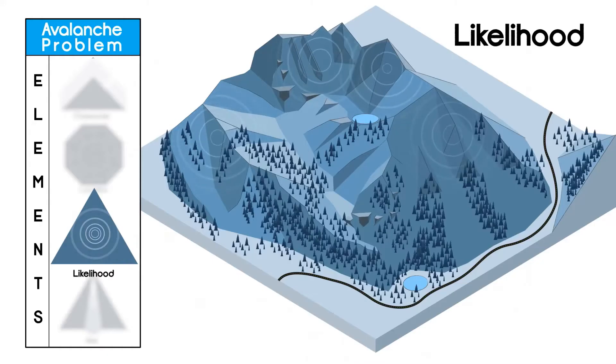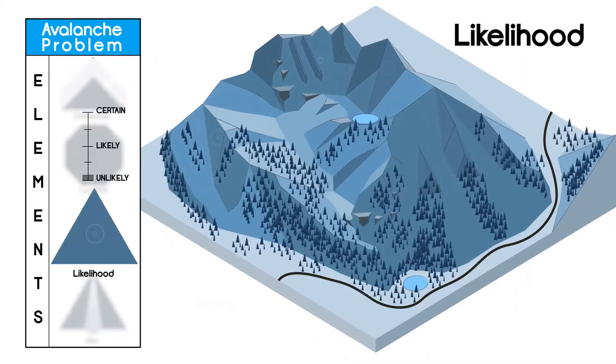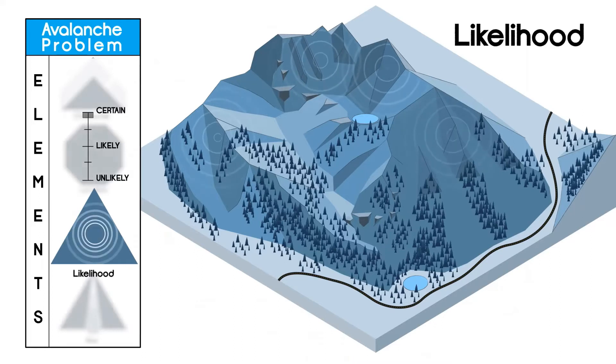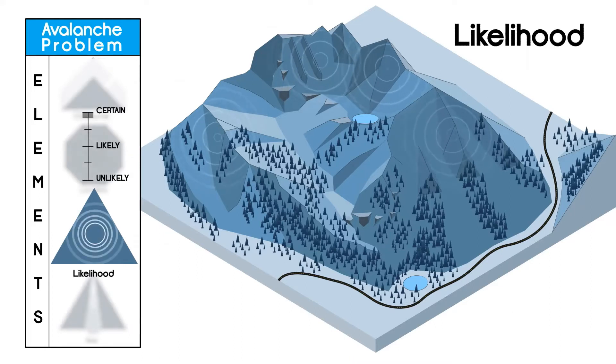Terms such as possible and likely are used to define the scale. The chance of triggered or natural avalanches increases as you move up the scale.